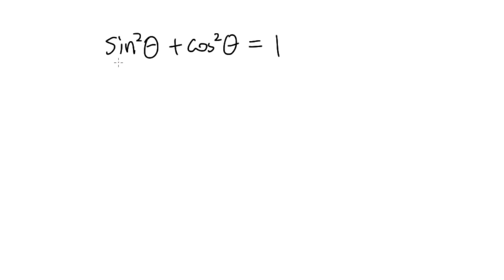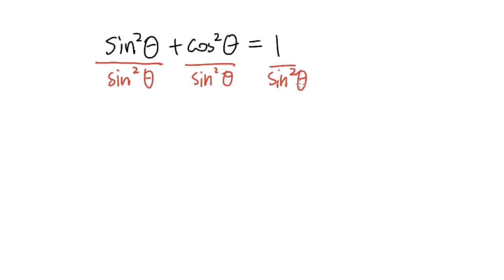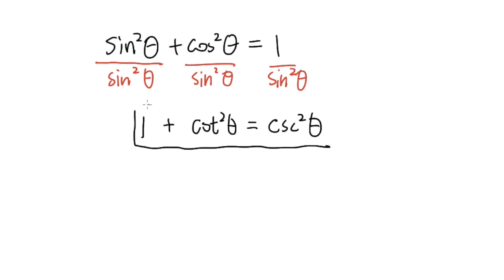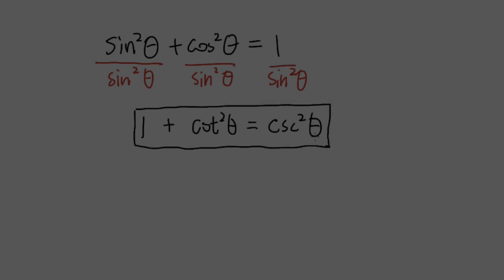For another similar identity, instead of dividing by cosine squared theta, let's divide everything by sine squared theta. Sine squared over sine squared gives 1. Cosine squared over sine squared gives cotangent squared theta. And 1 over sine squared gives cosecant squared theta. So we get 1 plus cotangent squared theta equals cosecant squared theta. These are all three Pythagorean identities involving the Pythagorean theorem.